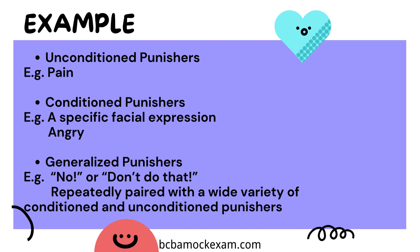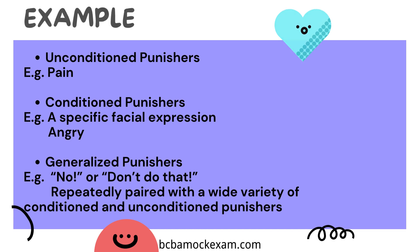Lastly, a generalized punisher is a stimulus that has acquired punishing effects through multiple associations with various punishers. For example, verbal commands like 'no' or 'don't do that' can become generalized punishers when they are frequently associated with different punishing situations, leading to aversive responses even in novel contexts. Understanding these types of punishers and their associations helps in comprehending the dynamics of behavioral responses and their underlying mechanisms.